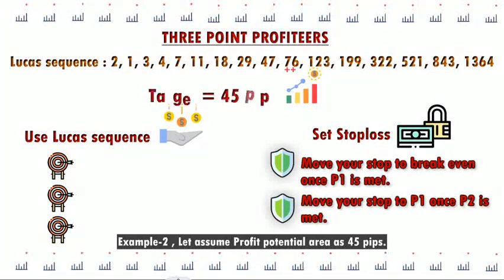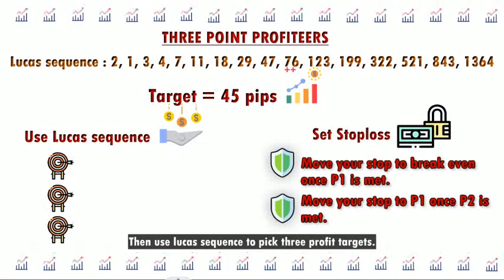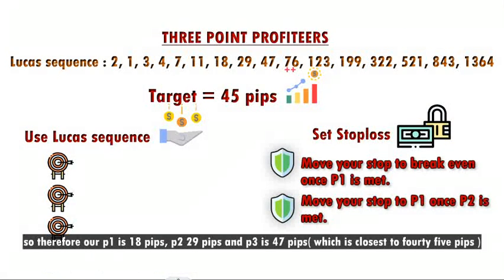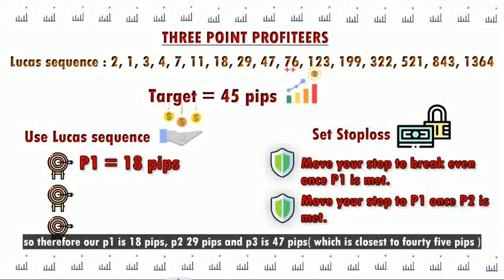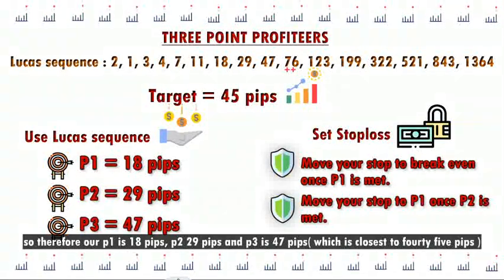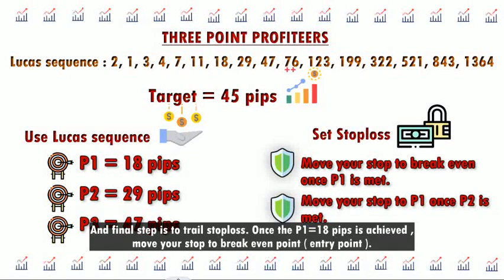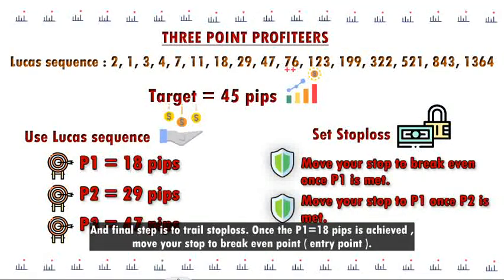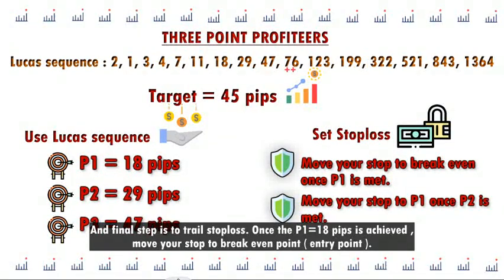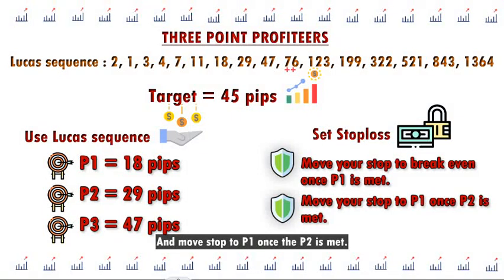Example 2: assume the profit potential area has 45 pips. Use the Lucas sequence to pick three profit targets. So P1 is 18 pips, P2 is 29 pips, and P3 is 47 pips, which is closest to 45 pips. For the final step, trail the stop loss: once P1 at 18 pips is achieved, move your stop to the break even point, which is the entry point. Then move the stop to P1 once P2 is met.